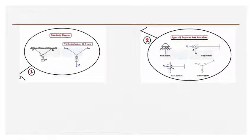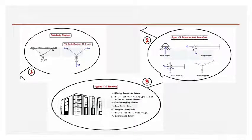We had seen the different types of supports: roller support, hinged support, fixed support, simple support, cable support, etc. We had also seen the types of beams depending upon the kind of support they carry: simply supported beam, beam with one end roller and another end hinged, both end hinged, cantilever beam, proper cantilever, overhanging, and the fixed beam.